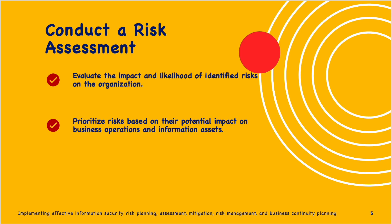The third step is to conduct a risk assessment and evaluate the impact and likelihood of identified risks on the organization. Prioritize risks based on their potential impact on business operations and information assets. This involves identifying, evaluating, and prioritizing potential risks. Classify and prioritize assets based on criticality, sensitivity, and importance. Then identify threats, identify vulnerabilities, determine potential impact, assess likelihood, and quantify the risk.